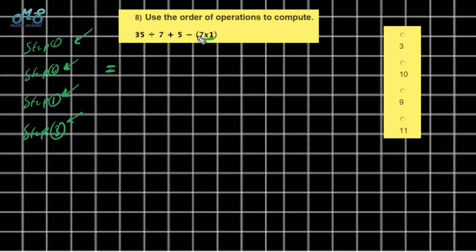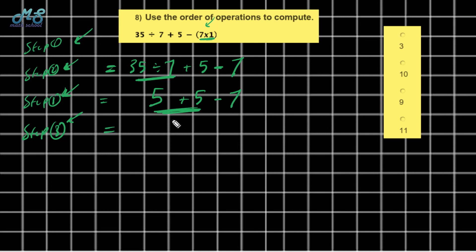The expression is 35 ÷ (7 × 1) + 5 − 7. First, do the bracket: 7 times 1 equals 7. Now divide: 35 divided by 7 equals 5. Then: 5 plus 5 minus 7. Add: 5 plus 5 equals 10. Subtract: 10 minus 7 equals 3. The value of the expression is 3 — the correct answer is the first one.